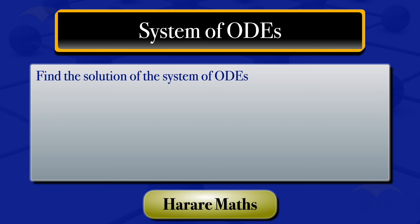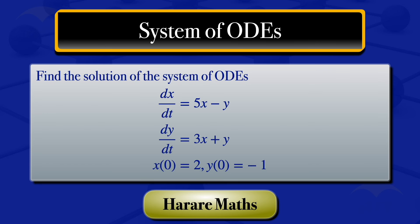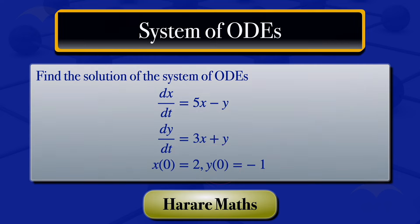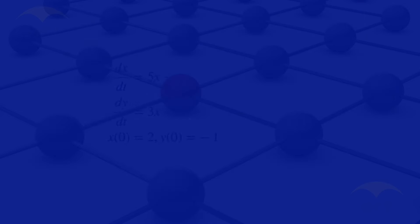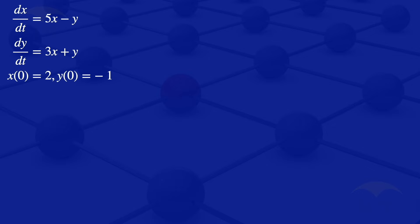In this video, I'm going to find the solution of the system of ODEs: the derivative of x with respect to t equals 5x minus y, and the derivative of y with respect to t equals 3x plus y, given the initial conditions x(0) equals 2 and y(0) equals minus 1.